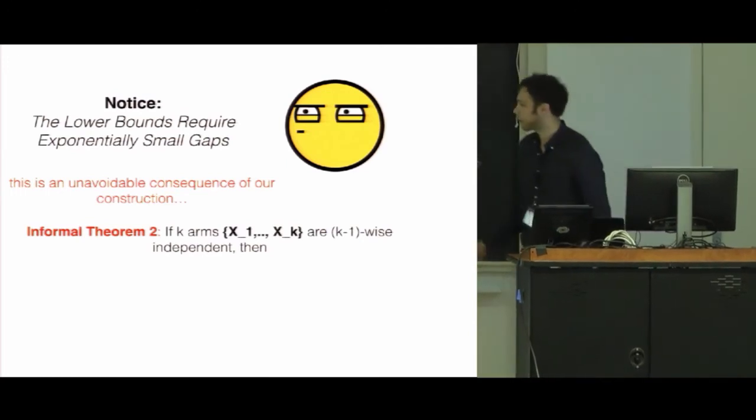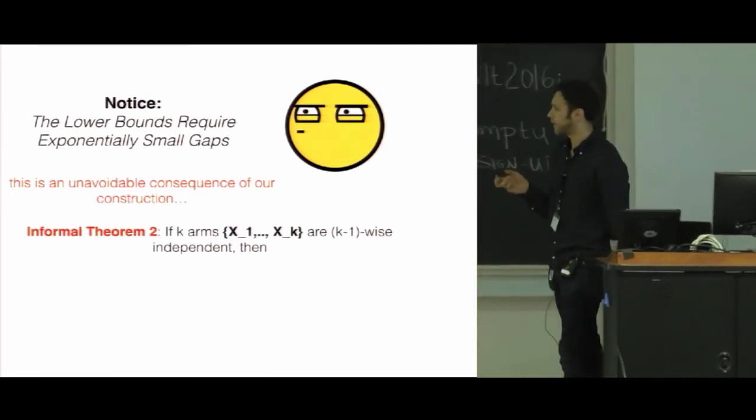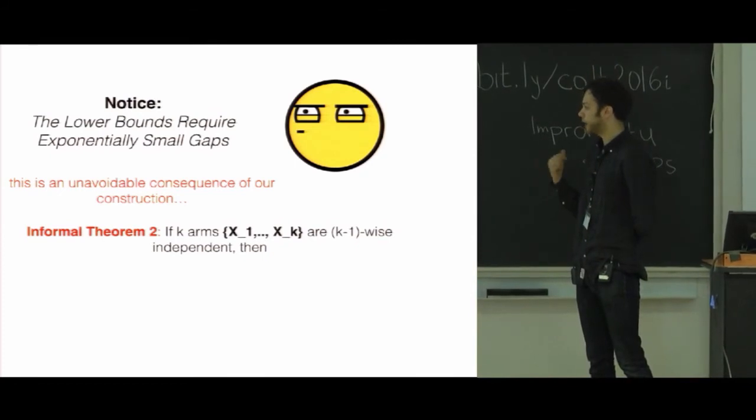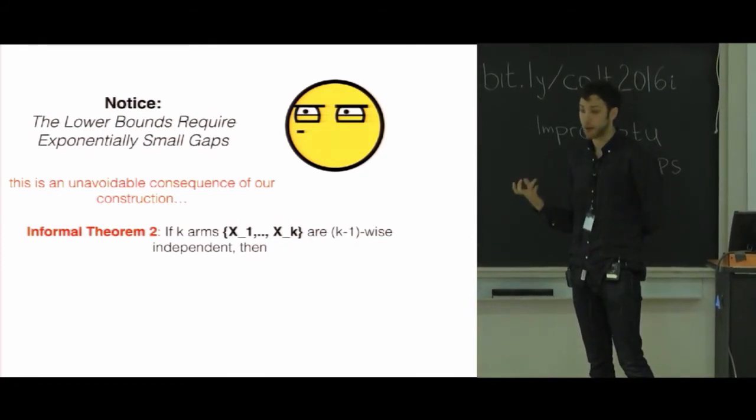What we found is what we were able to do is we were able to characterize distributions of k arms, which are k minus 1 wise independent, and share the same marginal distributions.